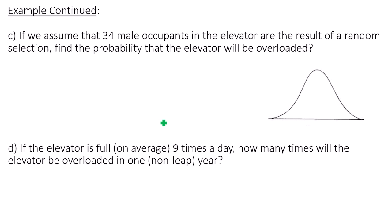So that's where the central limit theorem comes into place. So assume that 34 male occupants were in the elevator and were randomly selected. Find the probability that the elevator will be overloaded.